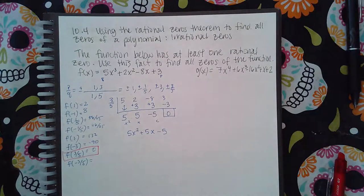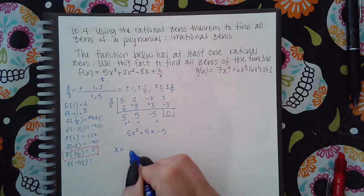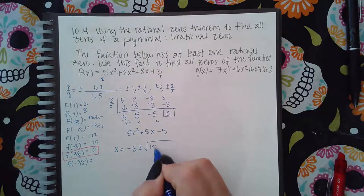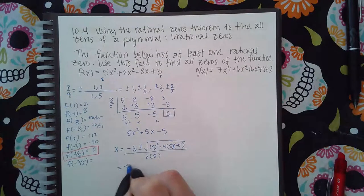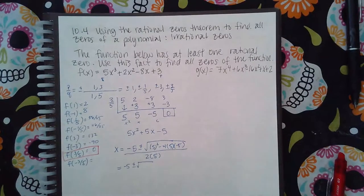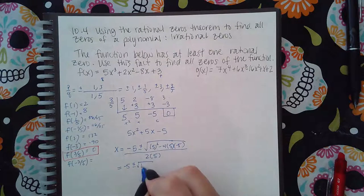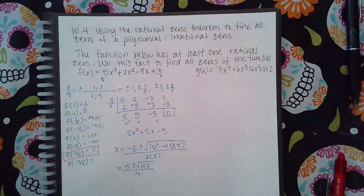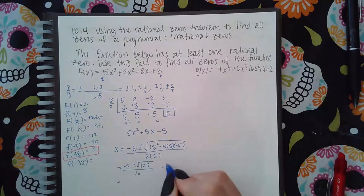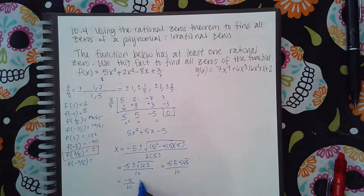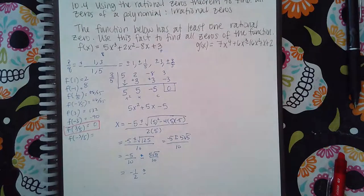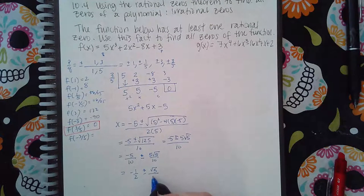You can try to factor that, but I just use the quadratic formula: x equals negative b plus or minus the square root of b² minus 4ac, all over 2a. So I get negative 5 plus or minus the square root of 25 minus 4 times 5 times negative 5. Under the radical I get 125, and the square root of 125 is 5√5. So the expression becomes negative 5 plus or minus 5√5, all over 10.